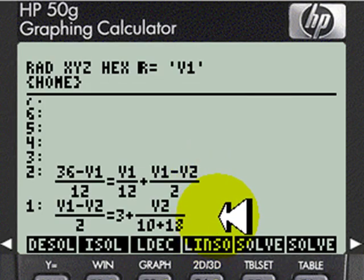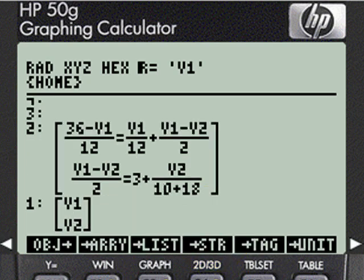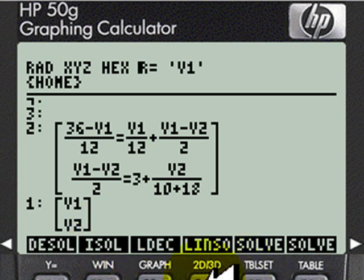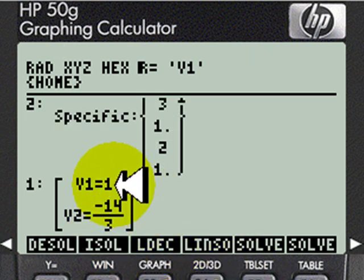These are the two equations. Let's solve them for V1 and V2. I tell the calculator what are the two unknowns I want to solve for, V1 and V2, and we ask for a solution with a symbolic solver. That is V1, and this is V2, negative 14 over 3.